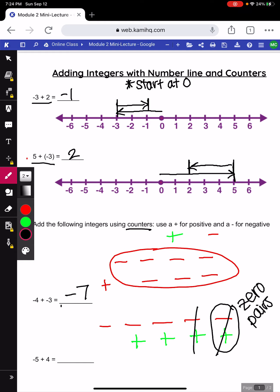So, once you draw out your counters, you can cancel out your 0 pairs. And we see that we are left with 1 negative, so our answer would be negative 1. Alright, so that was two different ways that we can use manipulatives to add our integers.